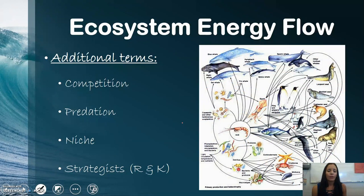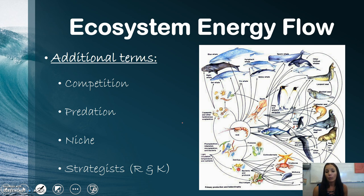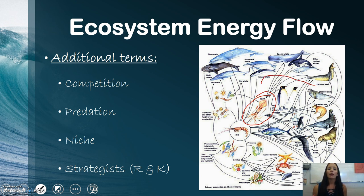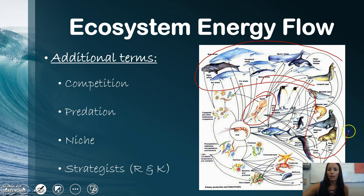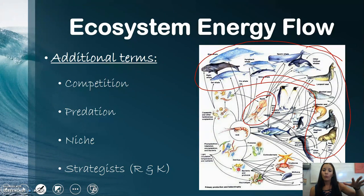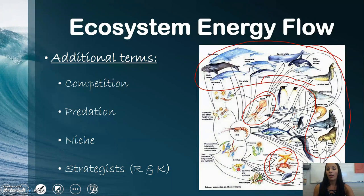Some other important terms: competition occurs between animals that eat the same food source or within the same population. In the food web shown, all animals that eat squid are competing for that food source. Predation is when something eats something else — your top organisms are your top predators, and they eat prey. A niche is the region an animal occupies within its food web or ecosystem. Whales feed near the surface, while starfish, crabs, and mollusks are benthic or bottom feeders — that's their niche.